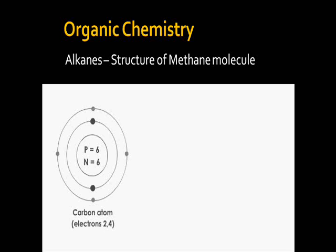The electronic configuration of carbon is 2, 4 — meaning there are four electrons in the valence shell. Therefore, carbon is tetravalent with a valency of four. Its bonding structure shows the carbon atom bonding with four different hydrogen atoms, each having one electron in its outermost shell.